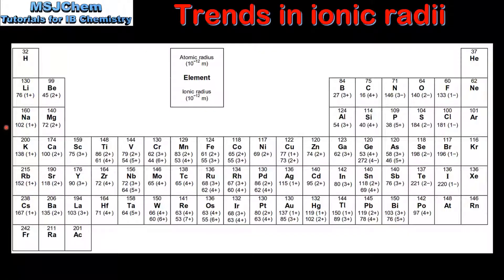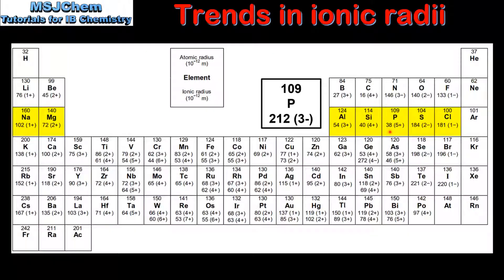Next we'll look at the trend across a period. We'll look at period 3 which starts with sodium. The first 4 elements in period 3 all form positive ions. If we look at the ionic radii of these ions we can see that it decreases from sodium to silicon. The next element in period 3 is phosphorus. According to this table phosphorus forms a 5+ ion, however it is more common to find that phosphorus forms a 3- ion.